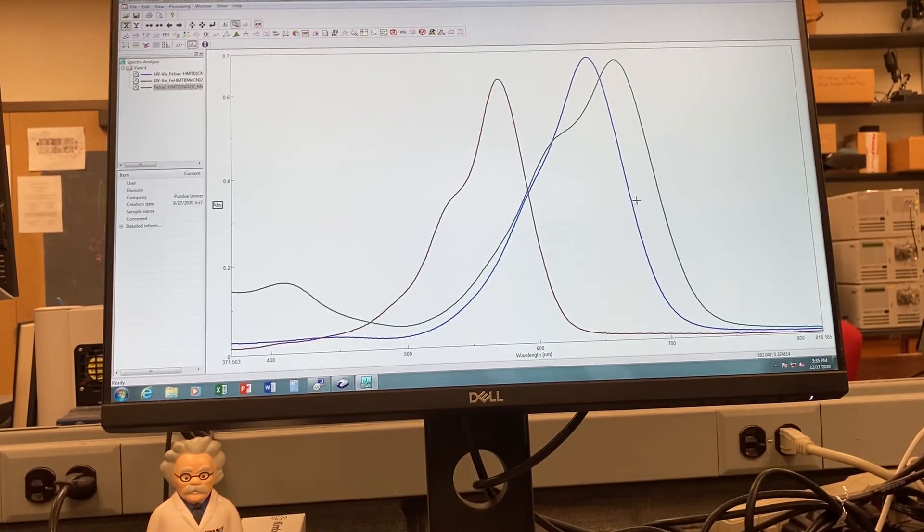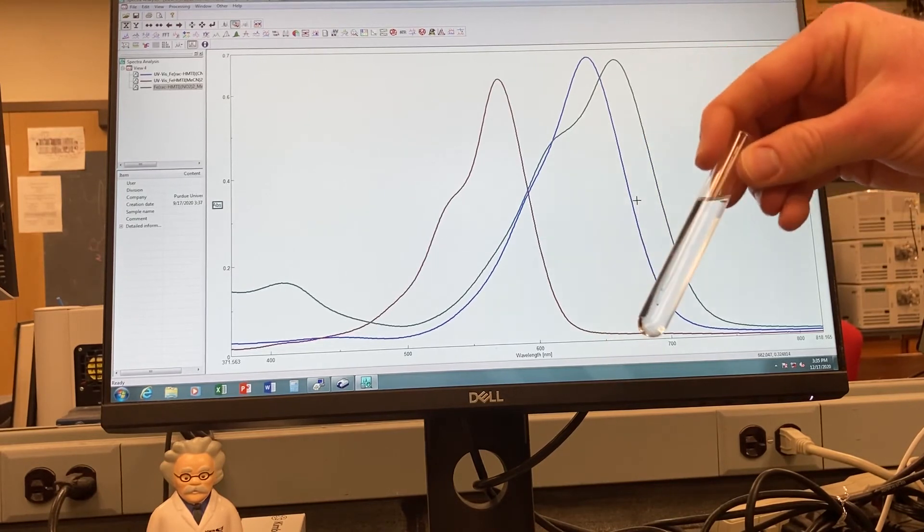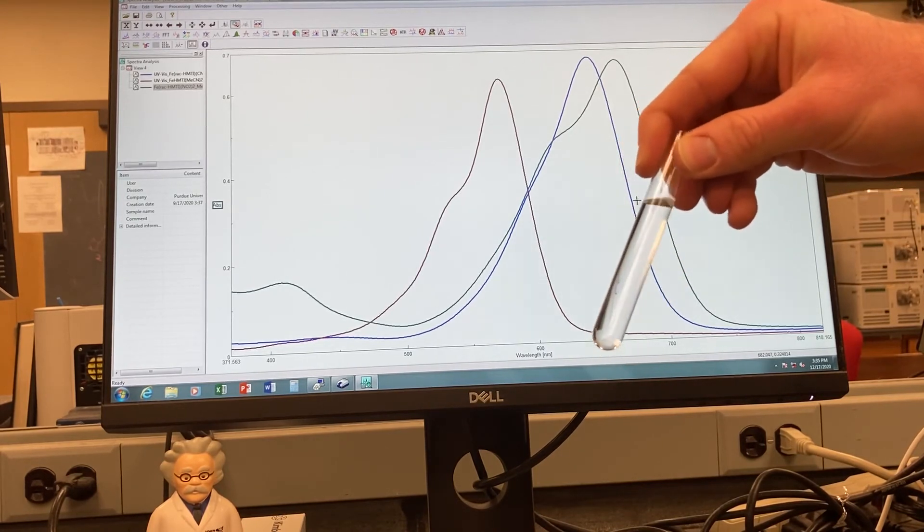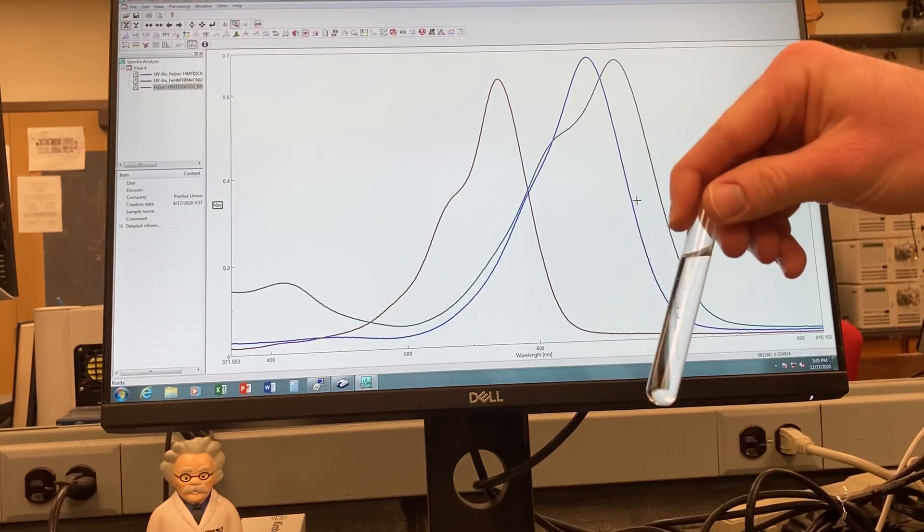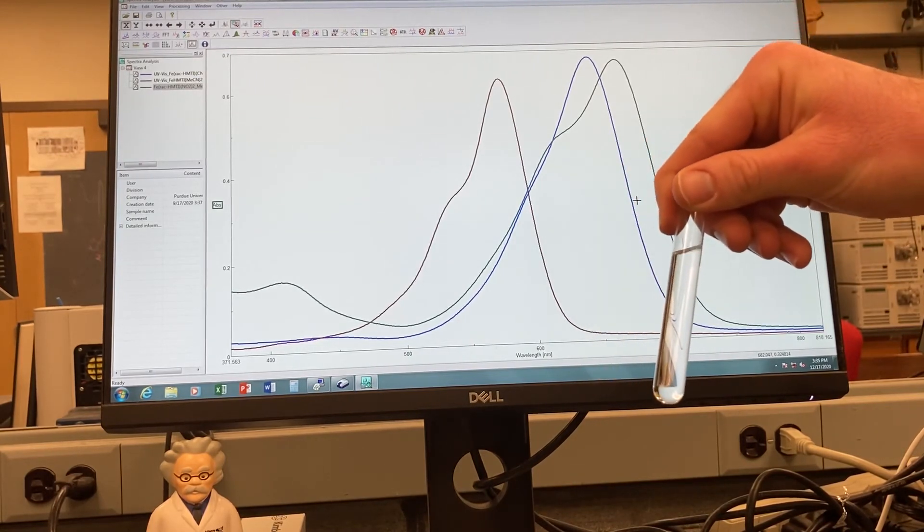Before we get too interested in this, I would like to show you this vial. This vial is colorless and, in fact, simply contains the solvent acetone. If you've ever used nail polish remover, you should be fairly familiar with this.